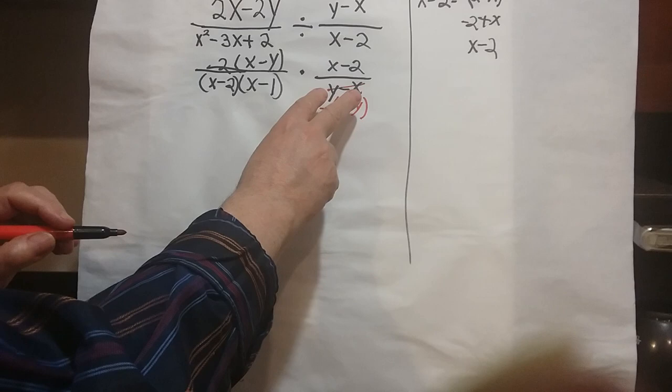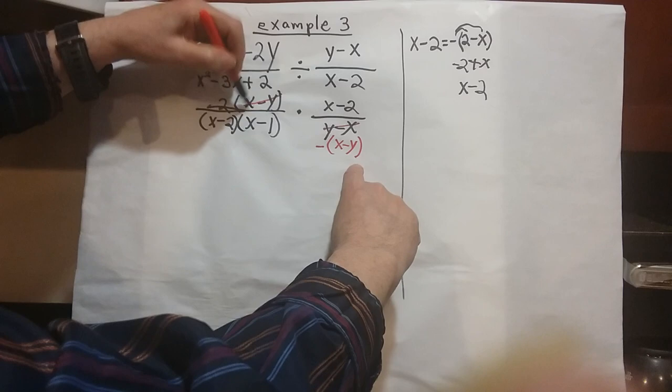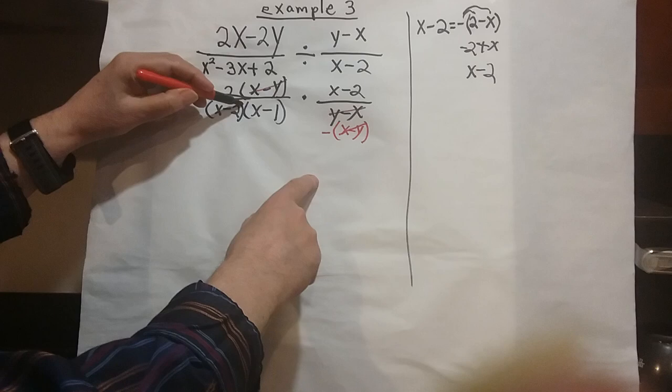So now that these are the same, you could cancel them out. Okay, and then on the other side over here, there's an x minus 2 and an x minus 2, and they cancel out. Notice this leaves you with a 1.